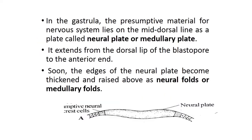The first major outcome is neural tube formation. The neural tube is always a dorsal structure. In the gastrula stage, the presumptive material for the nervous system is arranged such that micromeres are present on the dorsal side, whereas macromeres are present near the vegetal pole. This presumptive material for the nervous system lies on the mid-dorsal line.